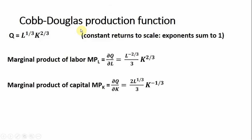We're going to start with a Cobb-Douglas production function. Notice that the exponents here sum to one, so we're dealing with constant returns to scale. As we're going to see at the end of the video, that will imply a horizontal long-run average total cost curve. The first thing we're going to do is get the marginal products of labor and capital.